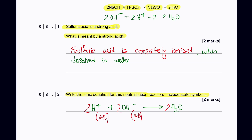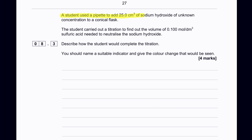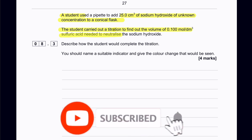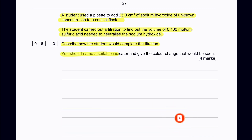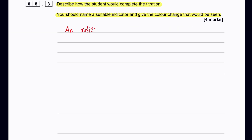A student used a burette to add 25 cm³ of sodium hydroxide of unknown concentration into a conical flask, then carried out a titration to find the volume of 0.1 mol/dm³ sulfuric acid needed to neutralize it. Describe how the student would complete the titration, name a suitable indicator, and give the color change.